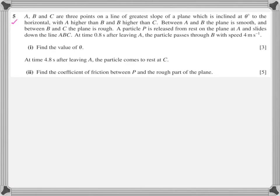This is question five. A, B, C are three points on the line of greatest slope of a plane which is inclined at θ degrees to the horizontal. A higher than B and B higher than C. It is very much advisable that you draw a nice, neat, clean diagram. Between A and B, the plane is smooth. Between B and C, the plane is rough. A particle P is released from rest on the plane at A and slides down the line ABC. At time 0.8 seconds after leaving A, the particle passes through B with speed 4 m/s. Find the value of θ.